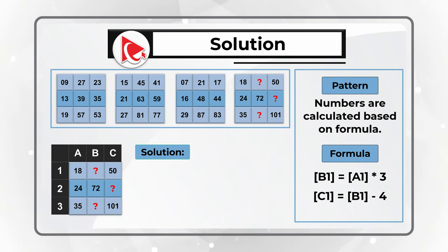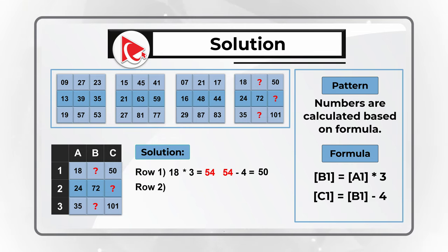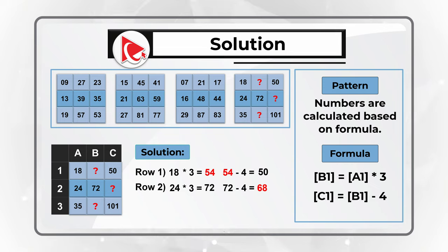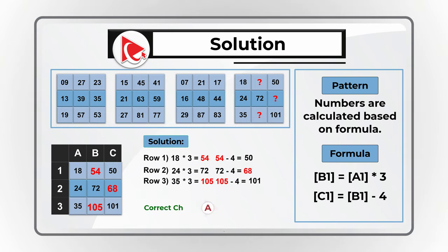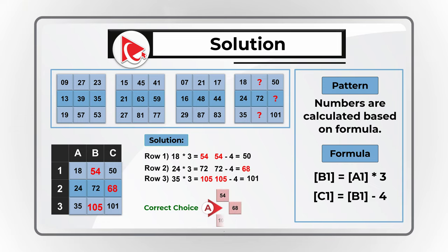To calculate the missing numbers in row 1: 18 multiplied by 3 equals 54, and 54 minus 4 equals 50. For row 2: 24 multiplied by 3 equals 72, and 72 minus 4 equals 68. For row 3: 35 multiplied by 3 equals 105, and 105 minus 4 equals 101. So the correct answer is choice A: 54, 68, and 105.